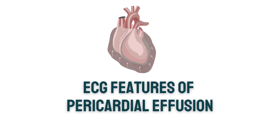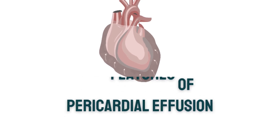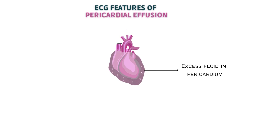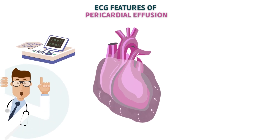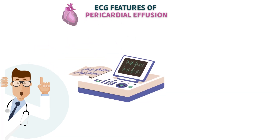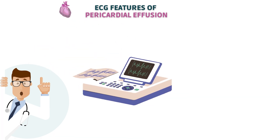Welcome to this video on the ECG features of pericardial effusion. Pericardial effusion is a condition where an abnormal amount of fluid accumulates in the pericardium, which is the sac that encloses the heart. In this video, we will discuss what ECG features are associated with pericardial effusion and how they can help us with the diagnosis, starting with what kind of changes we may notice on an ECG.